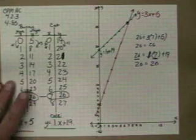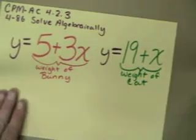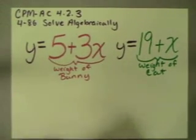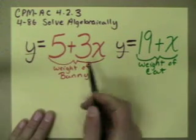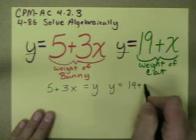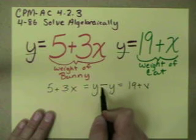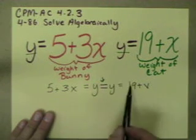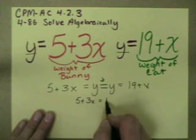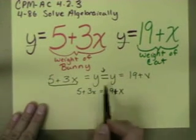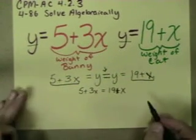Now we're going to use the new method, the equal values method. We take our two equations — they both equal y. I like to write them as: five plus three x equals y, and y equals nineteen plus x. Since we want the two y-values to be equal to each other, we can set the expressions equal: five plus three x equals nineteen plus x.